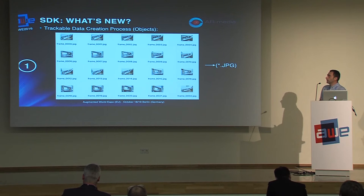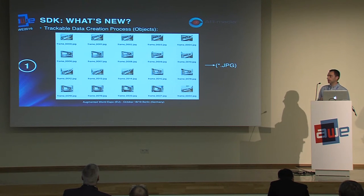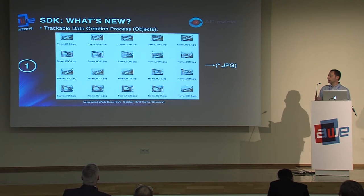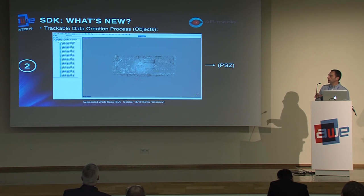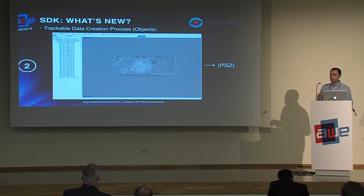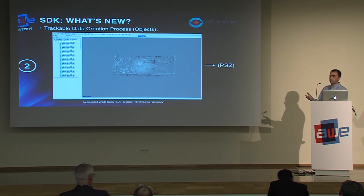Going to the tracking data creation process: first you use the AR Media Toolset application to take pictures — the number depends on the object and the application purpose, but typically you'd start with 16 to 50 pictures. From those pictures you create a point cloud. I'm now showing the new workflow that gives you more control. If you don't want to use third-party tools, you can simply upload the pictures to our developer portal; otherwise you can use a tool like Photoscan.